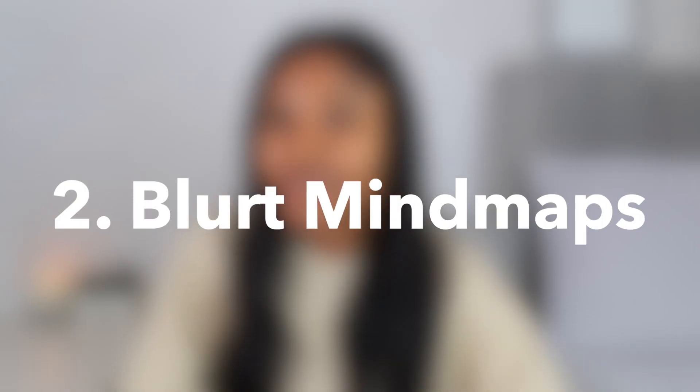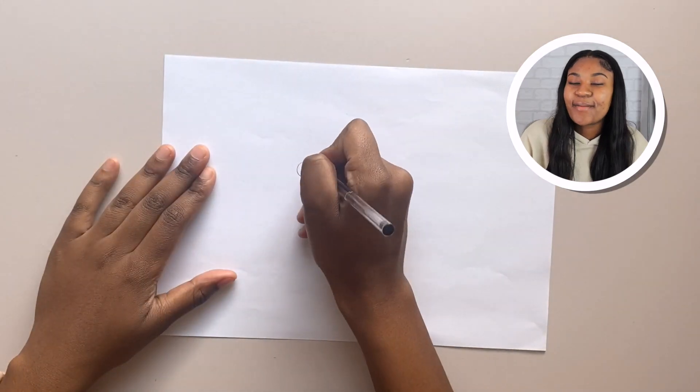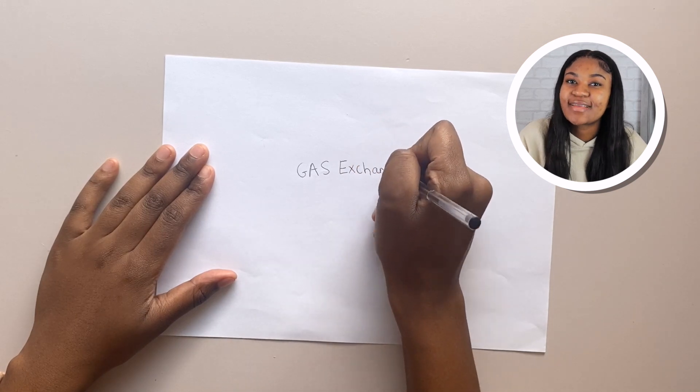Next, we have Blurted Mind Maps. This is actually one of my favourites and I learnt this technique from another YouTuber called Unjaded Jade — it is honestly a lifesaver. To make a Blurted Mind Map, all you need to do is put all of your notes away. Simply grab a piece of paper, then choose the topic that you'll be blurting about.